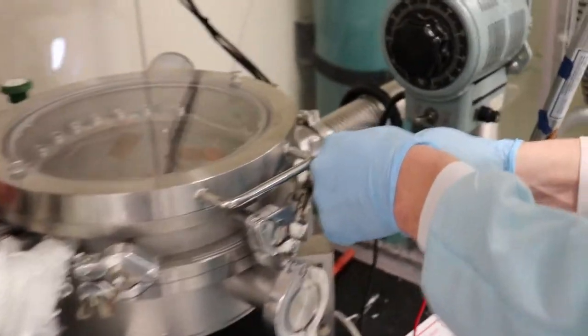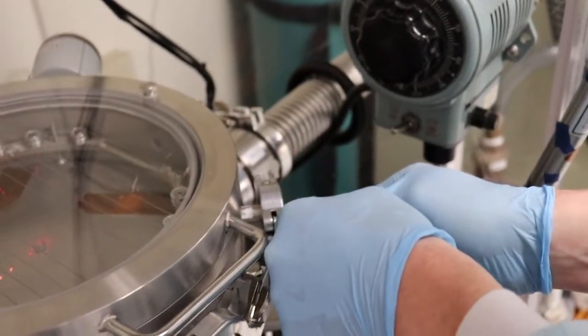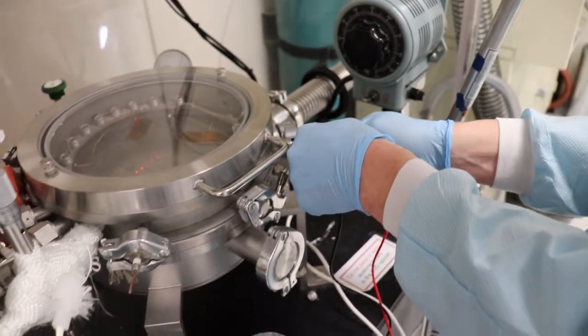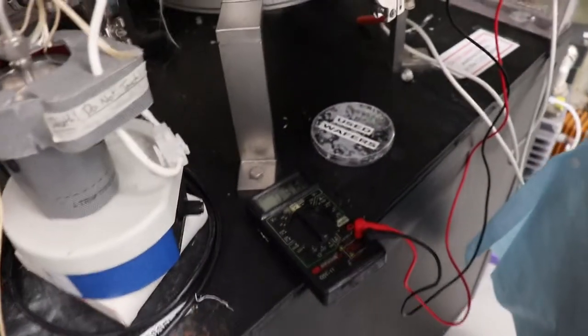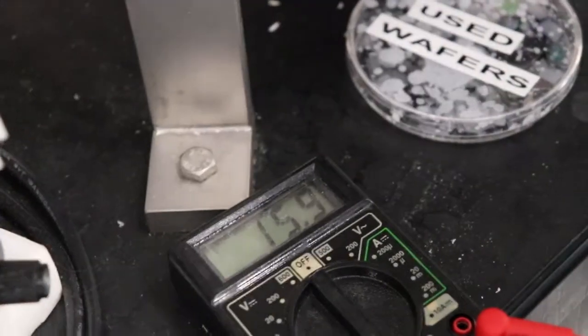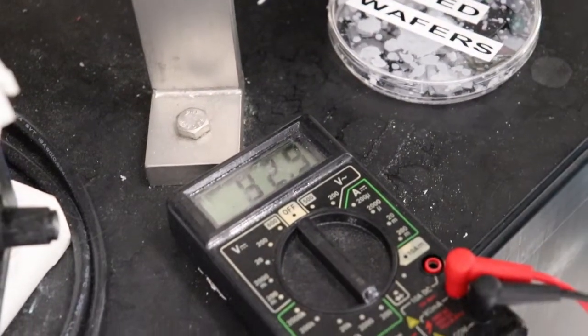Once this is all correct, the group then tested the connectors for the rheostat, which controls the filament temperature. We needed to make sure that there was a resistance through the filament so that the system would be properly heated.